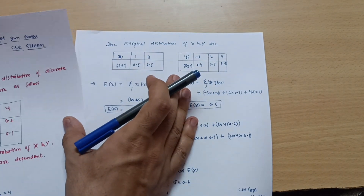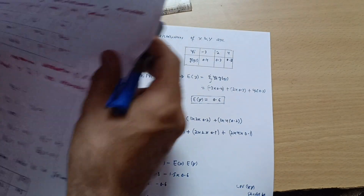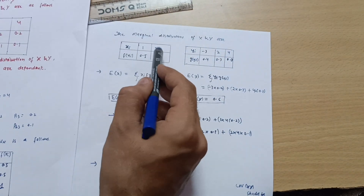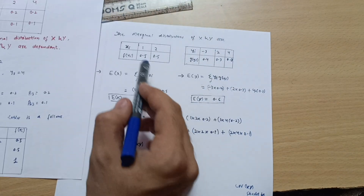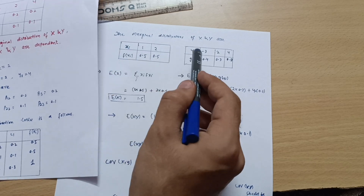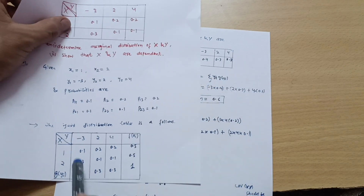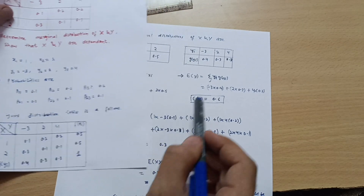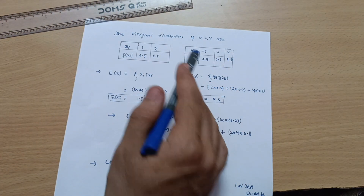Now write the marginal distribution tables. For x: xi = 1, 2 with f(xi) = 0.5, 0.5. For y: yi = −3, 2, 4 with g(yi) = 0.4, 0.3, 0.3 respectively. These are the marginal distribution tables for x and y.